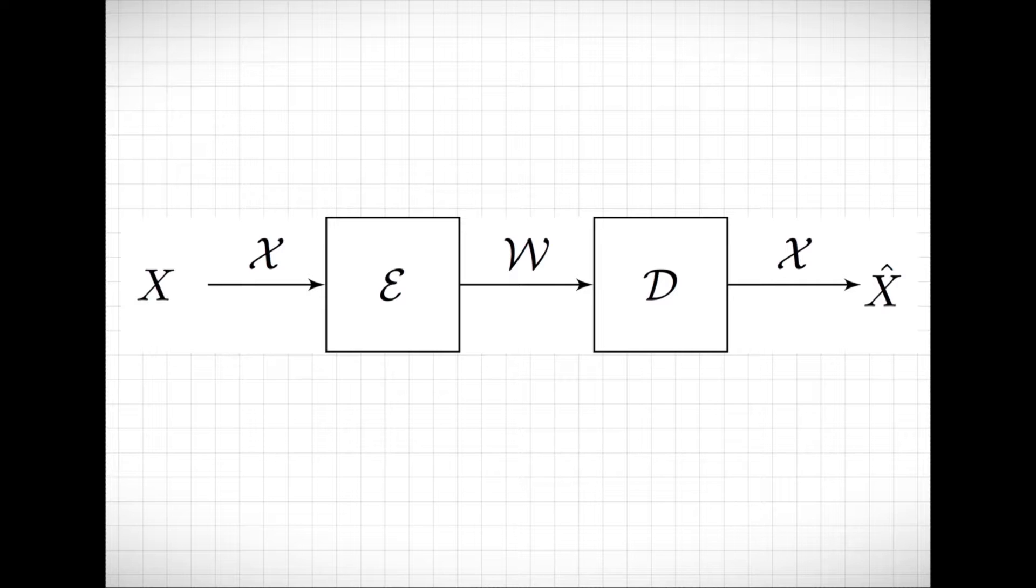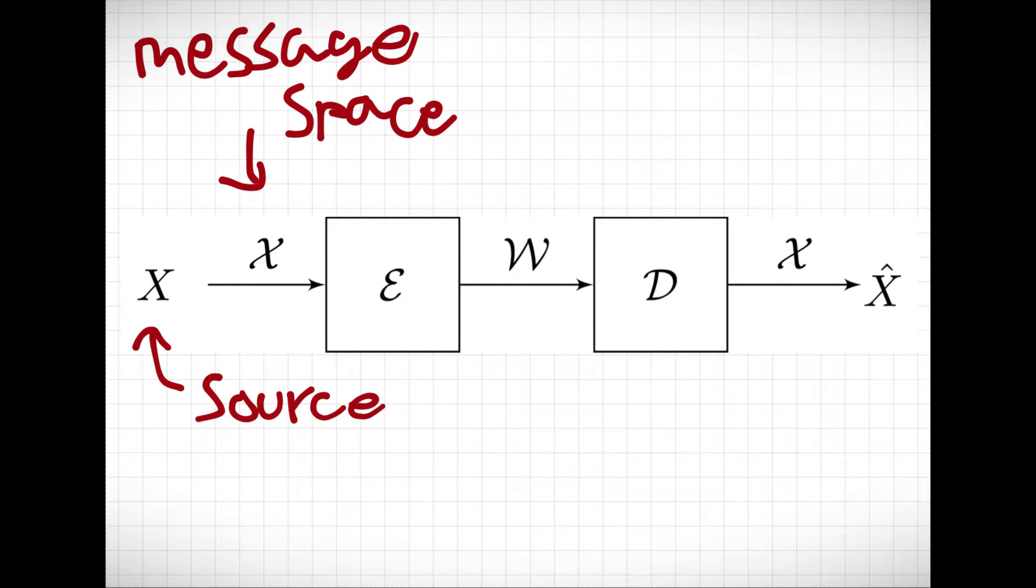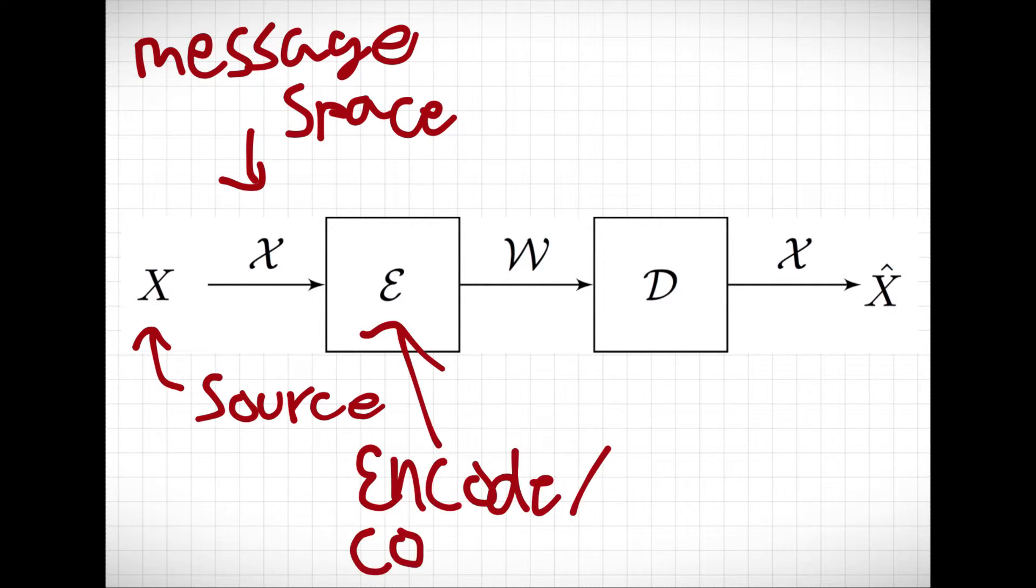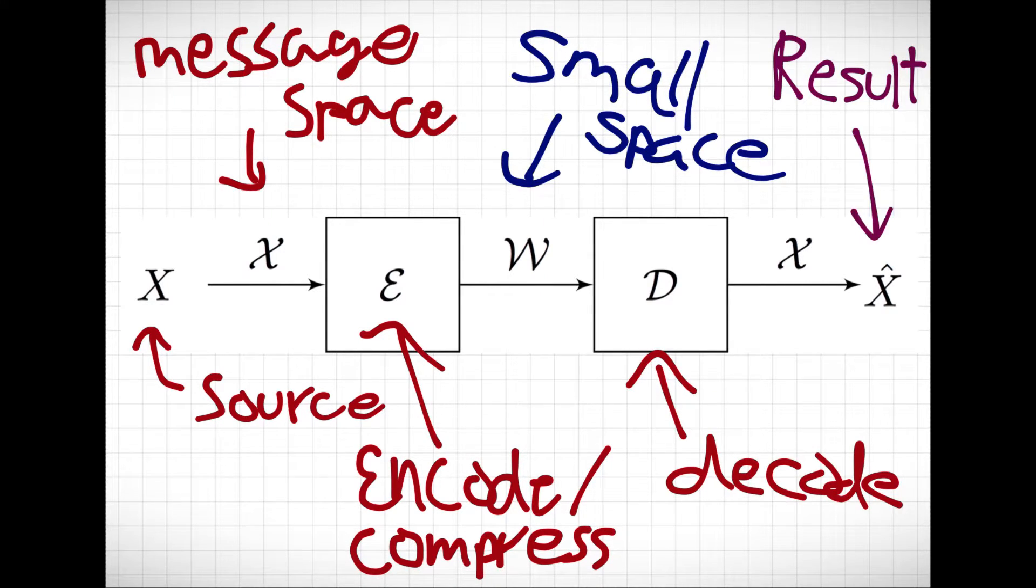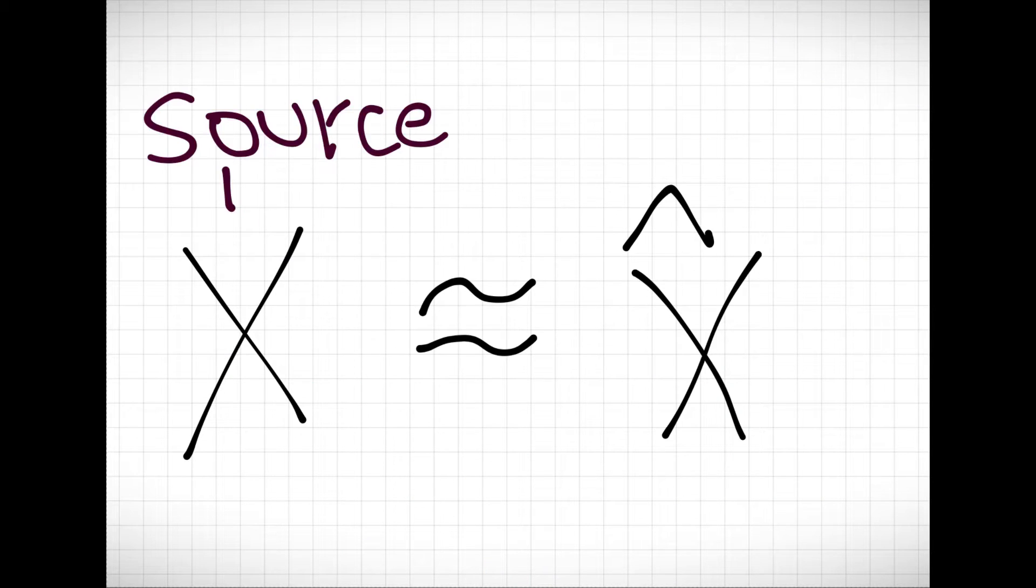Recently, I've been studying data compression. There, one tries to take the output of a source of information, that is, messages being sent out from the source, and then store it in the smallest space possible, such that we can later decompress it and recover the original information with a low probability of error.